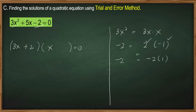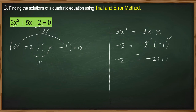Say we place 2 here and then negative 1 here. Let's try if this yields a correct factor by getting the product of the outer terms and the inner terms. So 3x times negative 1 is negative 3x. 2 times x is equal to 2x. Adding them, negative 3x plus 2x equals negative x. Negative x is not equal to our linear term 5x, so these are not the correct factors. So we try again.